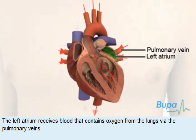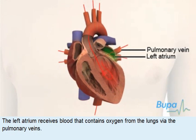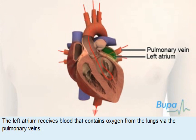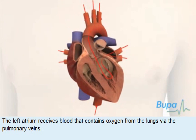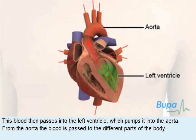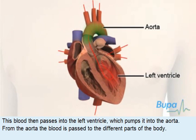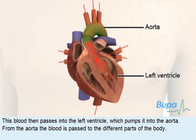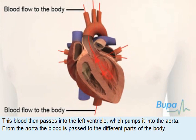The left atrium receives blood that contains oxygen from the lungs via the pulmonary veins. This blood then passes into the left ventricle, which pumps it into the aorta. From the aorta, the blood is passed to the different parts of the body.